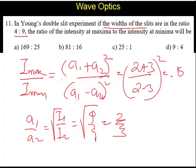It is 5 by 1 the whole squared, so it is 25 by 1. I maximum by I minimum is 25:1. The answer is C.